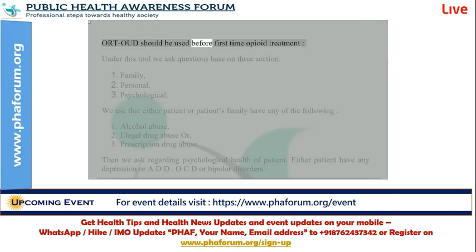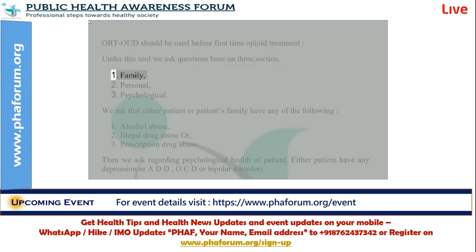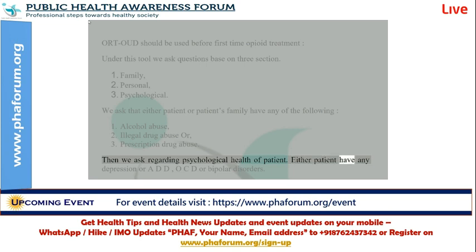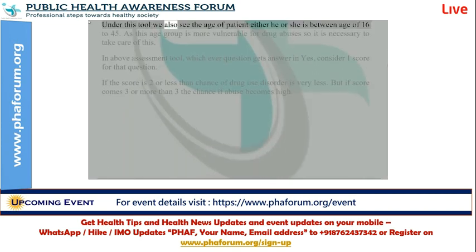The AUDIT-OUD should be used before first-time opioid treatment. Under this tool, questions are based on three sections: one, family; two, personal; three, psychological. We ask whether the patient or patient's family have any of the following: alcohol abuse, illegal drug abuse, or prescription drug abuse. We also ask regarding psychological health — whether the patient has depression, ADD, OCD, or bipolar disorders. We also see whether the patient is between the age of 16 to 45, as this age group is more vulnerable to drug abuse.